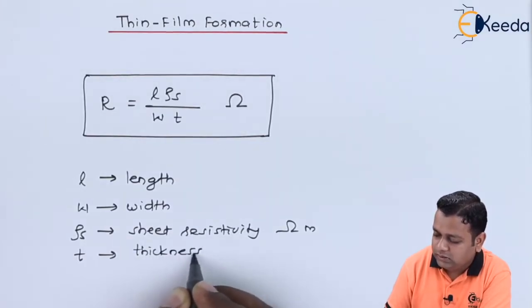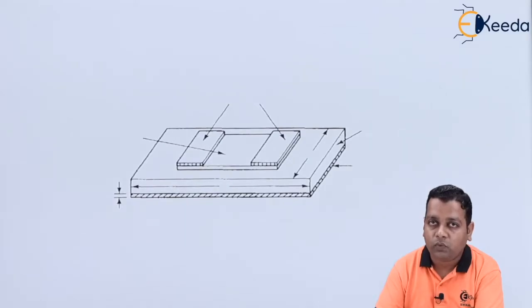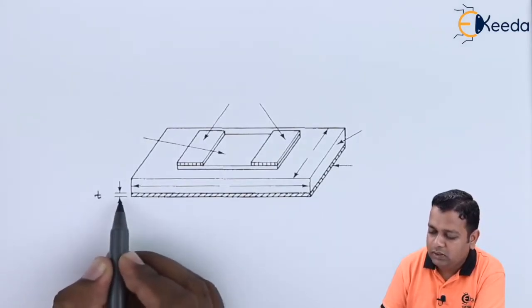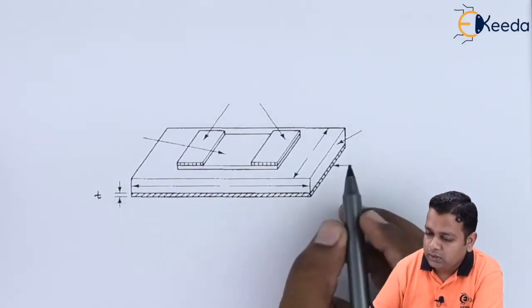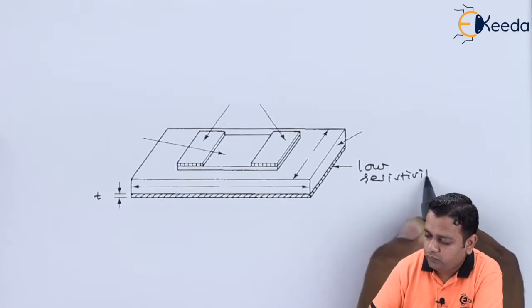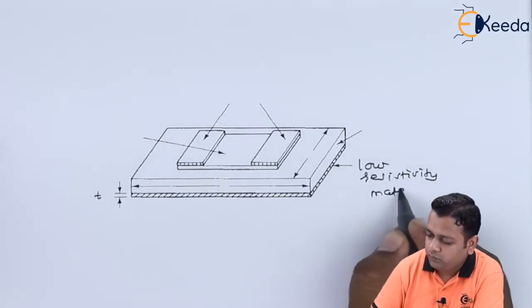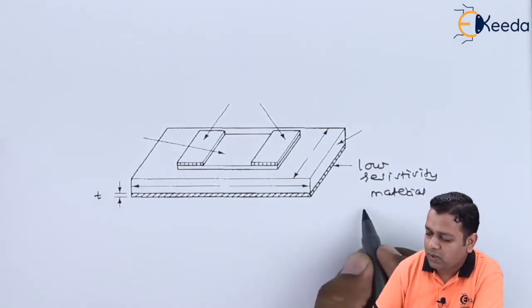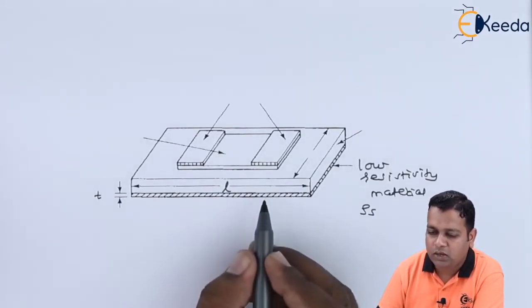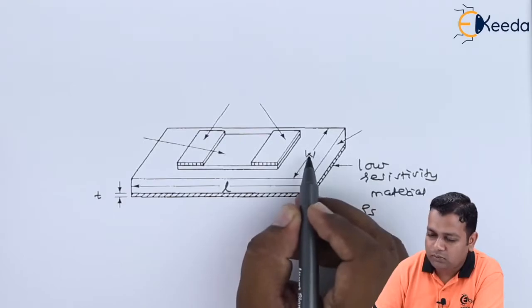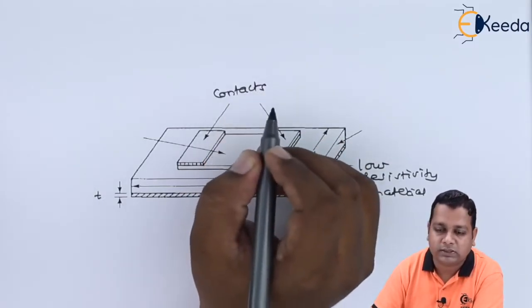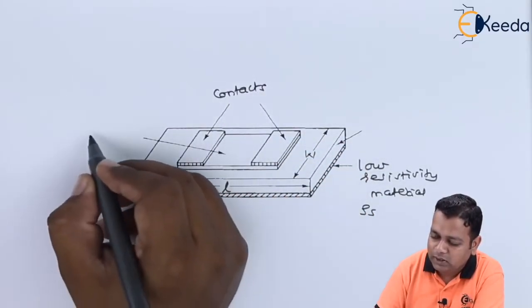The parameter t in the denominator denotes the film thickness in terms of meters. This is the generalized diagram with respect to the thin film resistor, where t is represented as a parameter of thickness. This is the low resistivity material, characterized by the parameter rho s. The dimensional length is denoted as L, the width w is denoted accordingly, and the two ends form the contacts of this resistor — this is the basic resistive material.